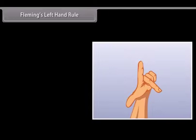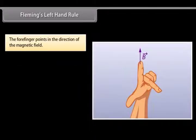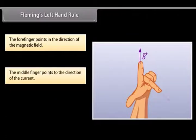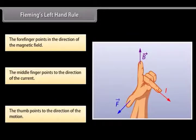Fleming's Left Hand Rule. Fleming's Left Hand Rule is a mnemonic to represent three directions. You need to stretch your thumb, forefinger and middle finger of your left hand. Each finger points to a specific direction. The forefinger points in the direction of the magnetic field. The middle finger points to the direction of the current. The thumb points to the direction of the motion. This is Fleming's Left Hand Rule.